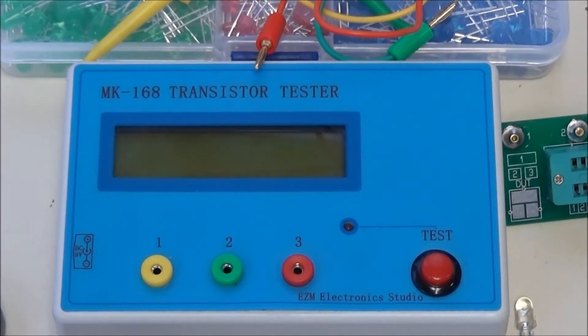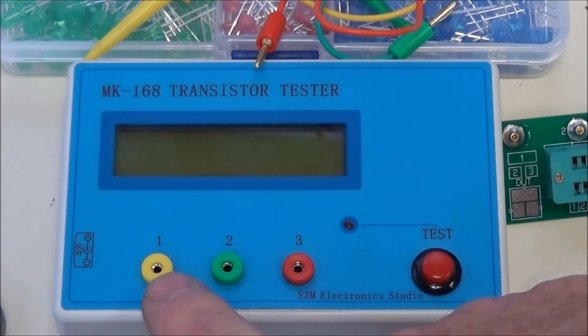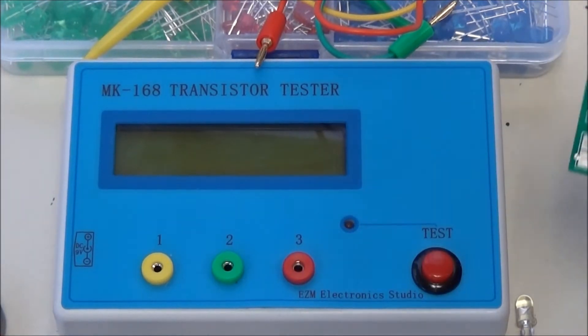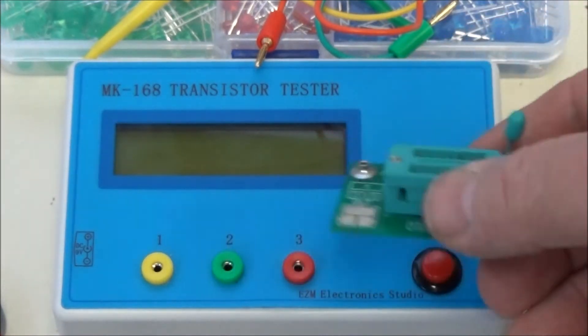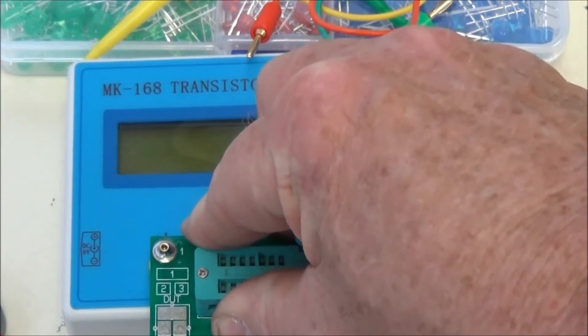It'll test your component, then it'll go off. Let's note the yellow, green, and red are numbered 1, 2, 3. The tester comes with this little bitty board that plugs into those three banana jacks.